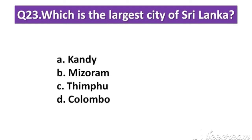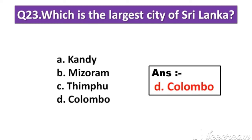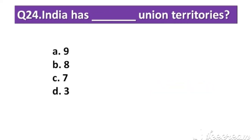Question number 23: Which is the largest city of Sri Lanka? Option A: Kandy. Option B: Misoram. Option C: Thimbu. Option D: Colombo. The right answer is Option D: Colombo.